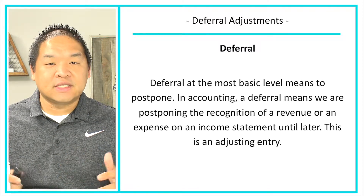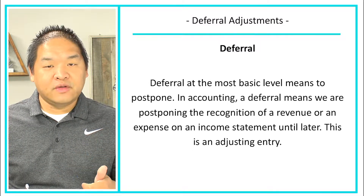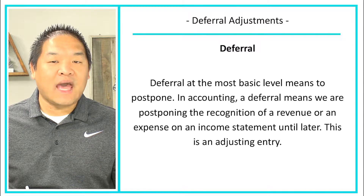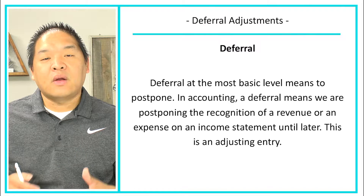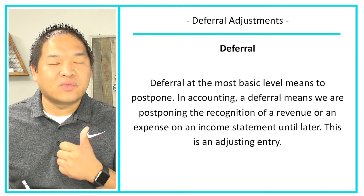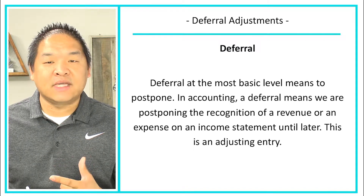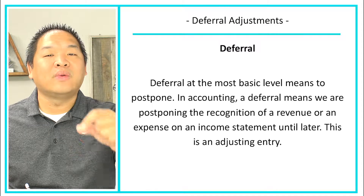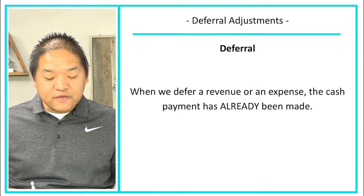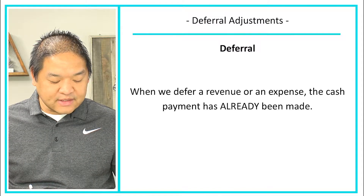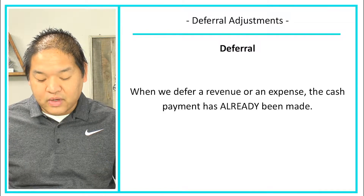Now this is the adjusting entry. What's happening is that we could be incurring revenues or expenses now, but we are deferring it for some reason. That reason is usually because we haven't earned the revenues yet or haven't actually incurred the expenses yet, but we paid for them or received the cash beforehand. So when we defer revenues or an expense, the cash payment has already been made or received.